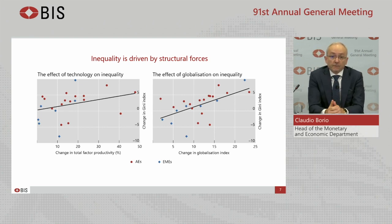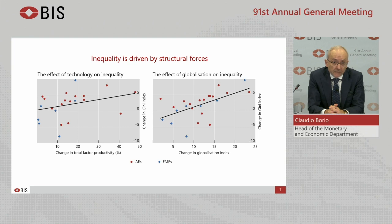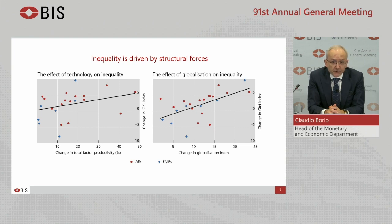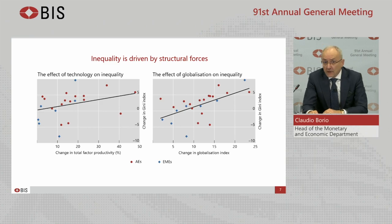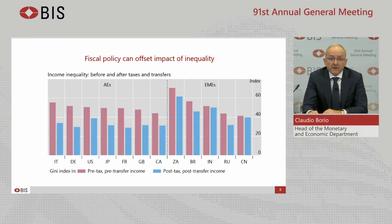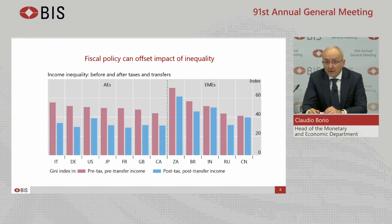Structural causes call for structural remedies. Ultimately, only structural policies can adequately address inequality. They can tackle the underlying forces by improving health, education, antitrust legislation, and more generally, by fostering equal opportunities. In addition, as this graph shows, fiscal policy can offset the impact of those forces. Inequality is significantly lower after the tax and transfer system has done its job. The red bars are higher than the blue bars.